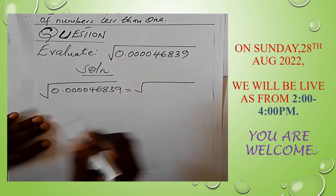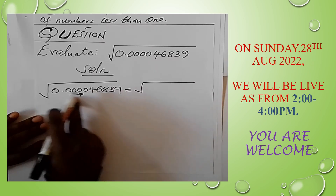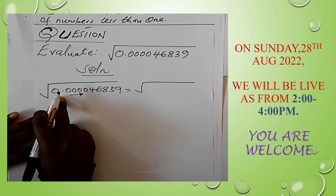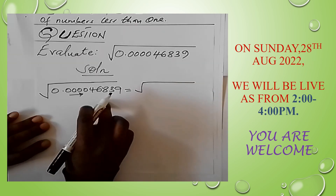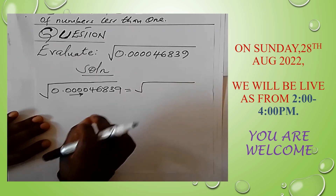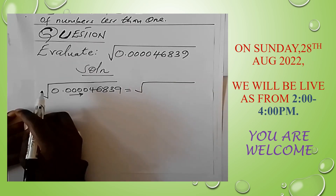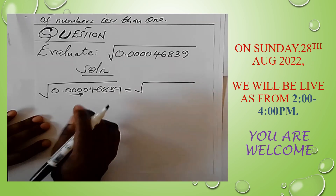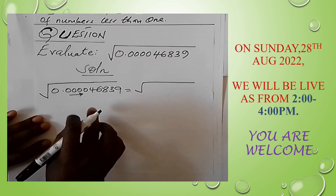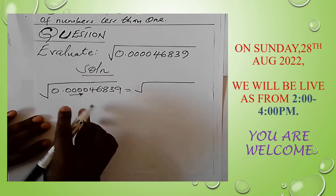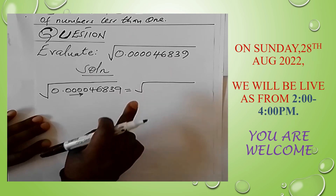When you move the decimal from left towards the right-hand side, the power will be negative. But if you are moving the decimal from your right-hand side towards the left, the power is going to be positive. So in this case the power is minus 5, giving 4.6839 times 10 to the power minus 5.